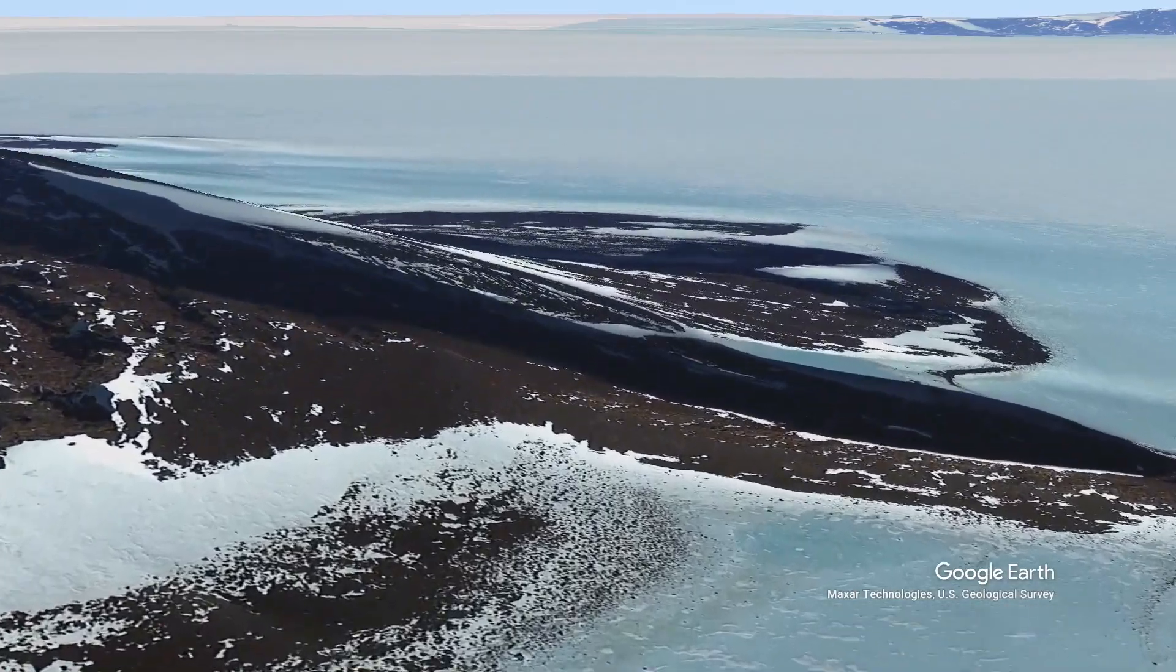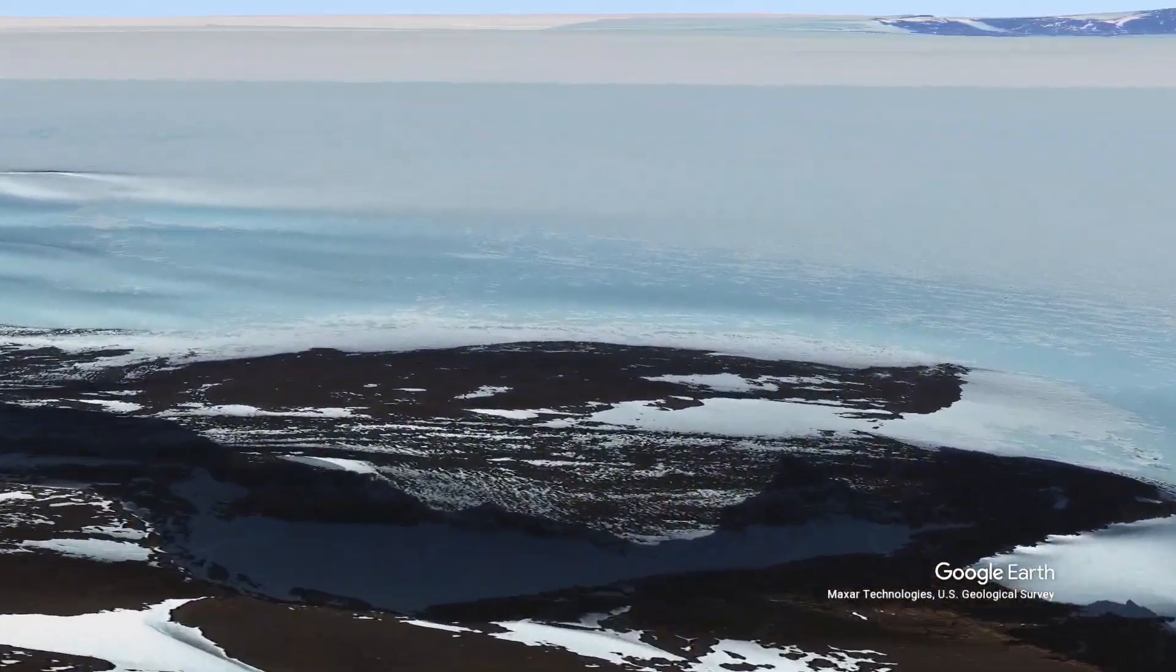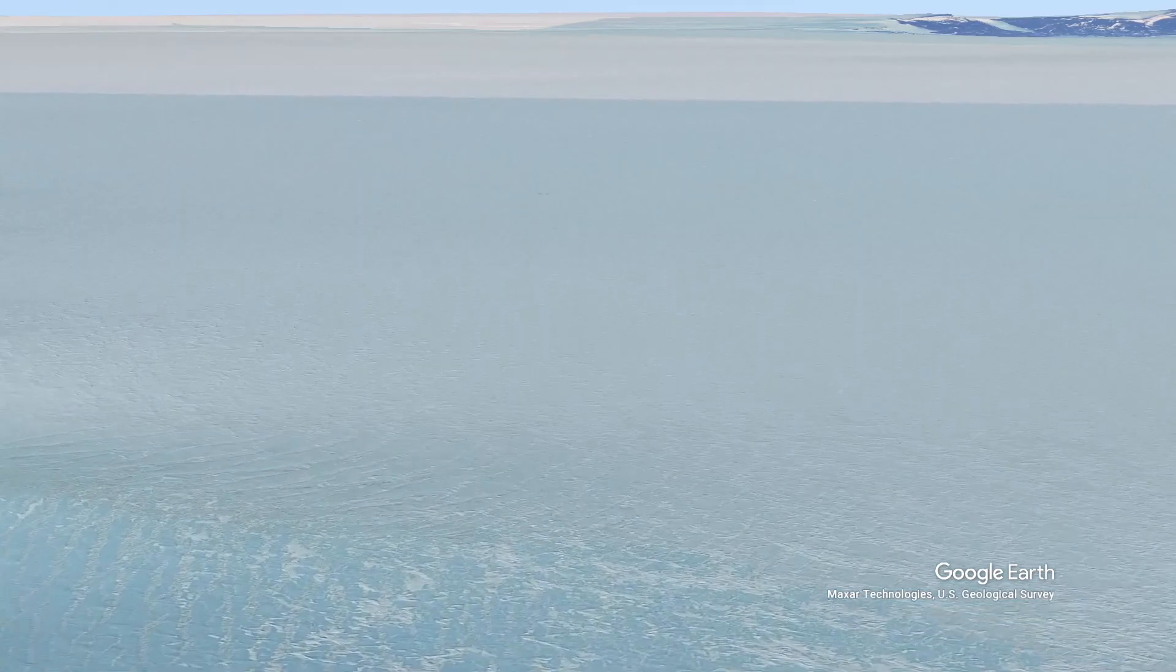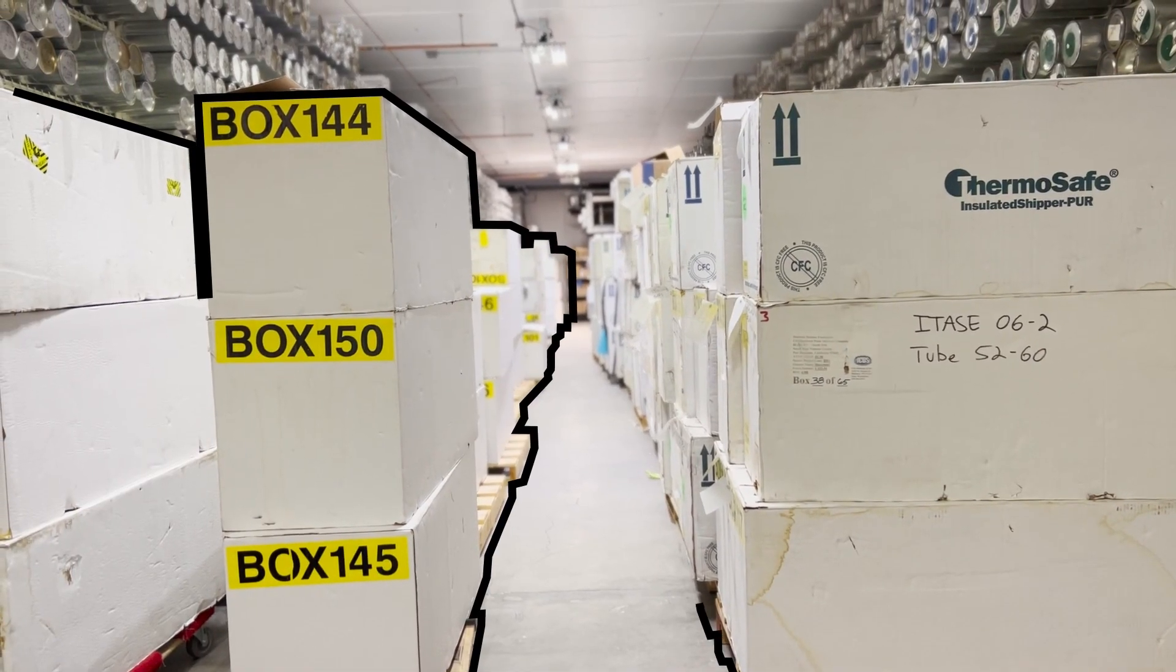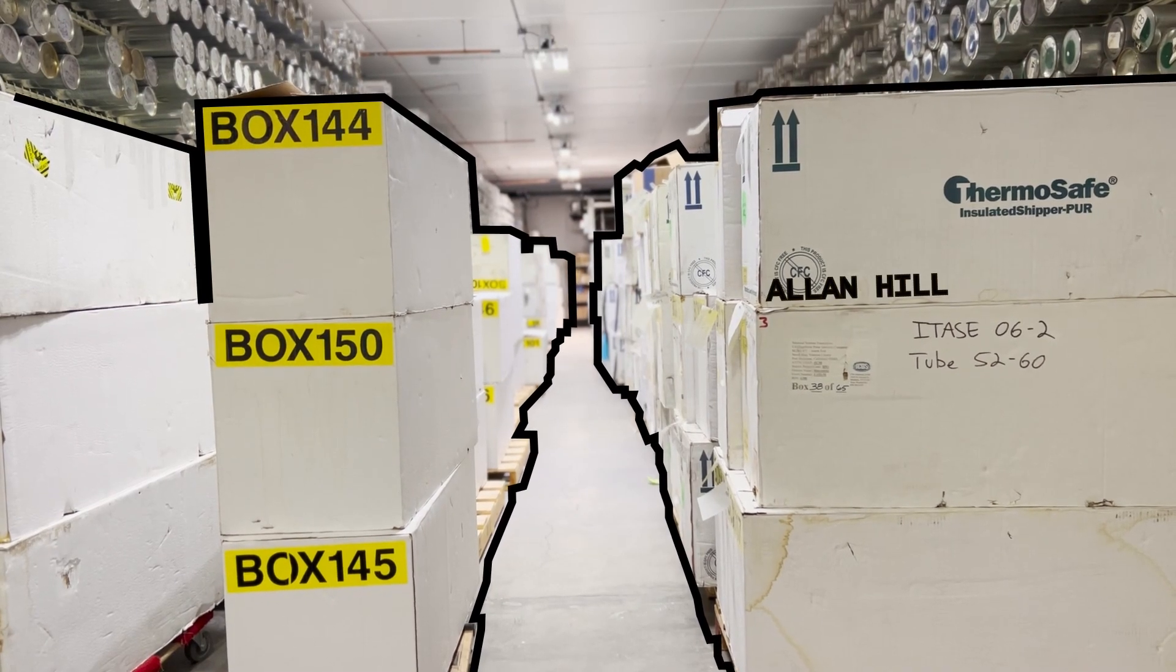This past year's ice cores collected from Allen Hills Antarctica are especially of interest to scientists because they contain some of the oldest ice ever found and collected on Earth, extending the ice core record to up to 4 million years.